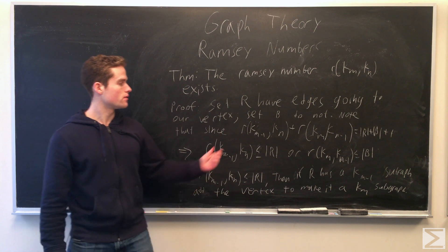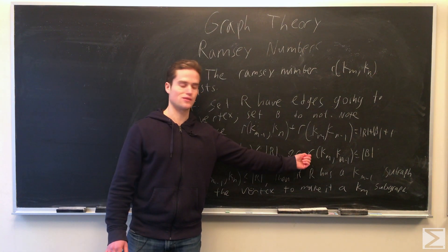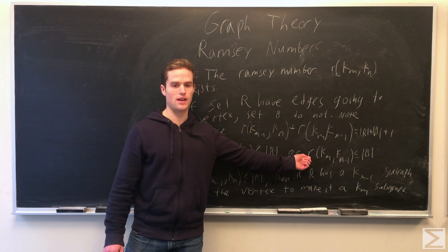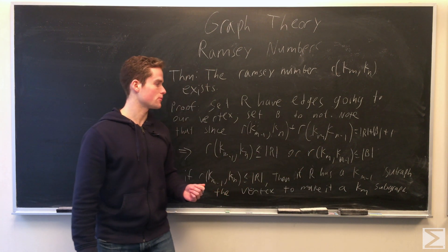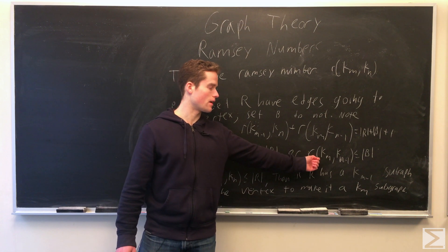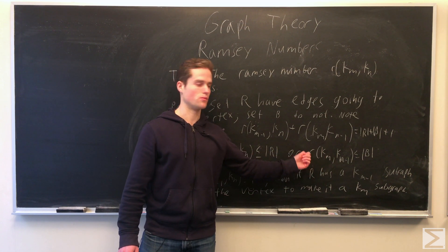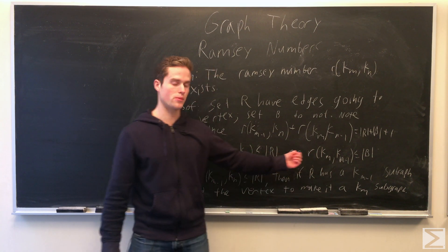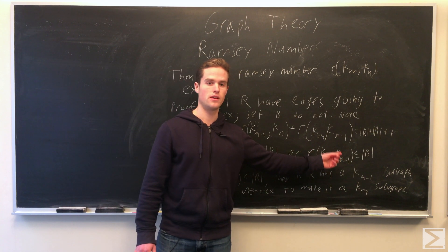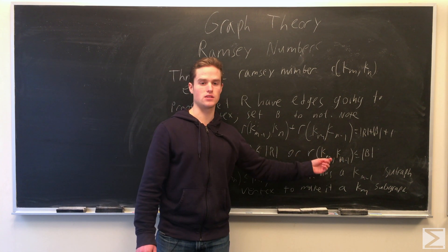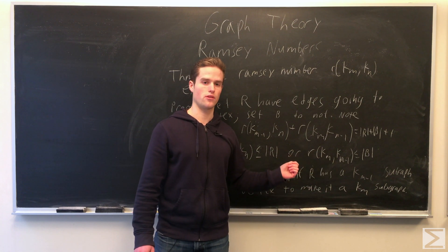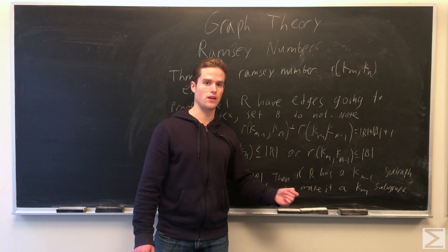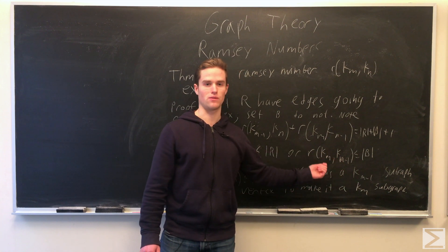And if instead the one on the right is true, R(k_m, k_n minus 1) less than or equal to B, almost the exact same thing happens. Either we have a k_m graph in B, in which case we're done, or the complement has a k_n minus 1 graph. In that case, because none of the vertices in B have edges going to our vertex, we take the complement. Then they all have edges, and we have a k_n minus 1 graph, so we have a k_n graph.